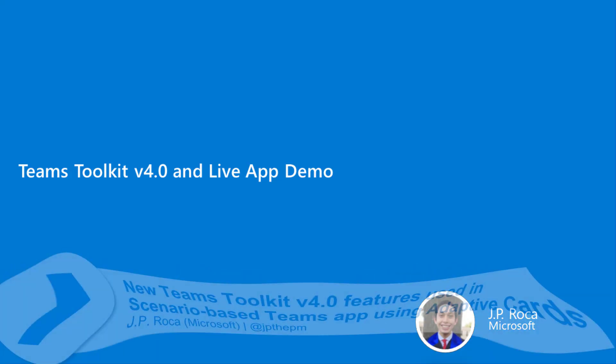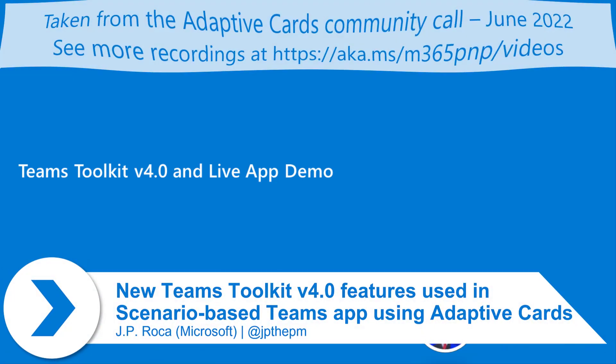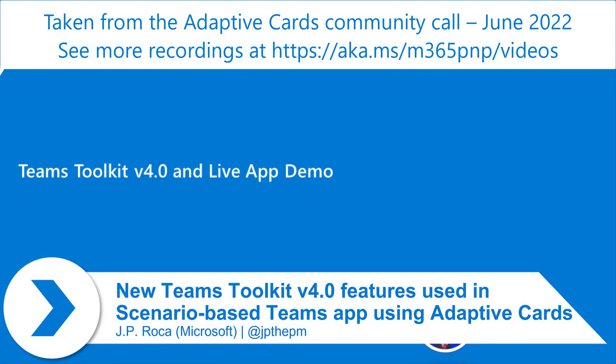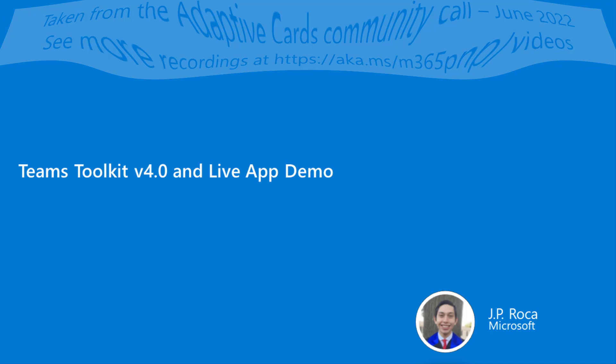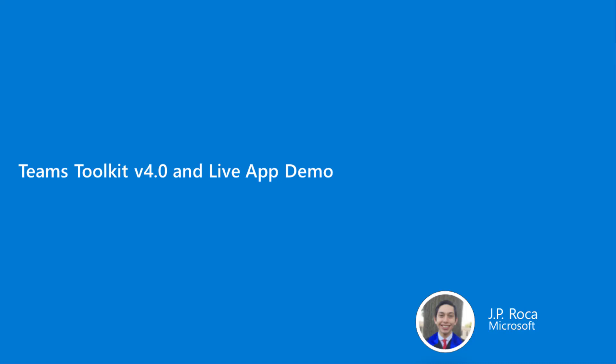I'll talk about the Teams Toolkit version 4.0. The Teams Toolkit is a Visual Studio Code extension that allows you to create Teams apps with very minimal work. It'll provide the boilerplate code to get you started up and running. In version 4.0, which was the most recent release announced at Build, they allow for scenario-based app creations — things like bot notification apps and command bot apps for Teams, by just making a couple clicks in Visual Studio.